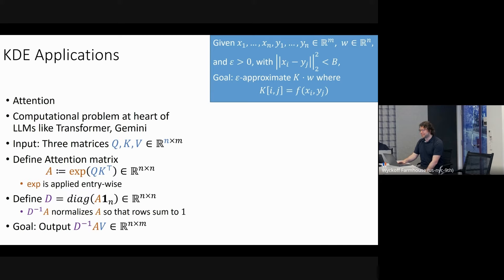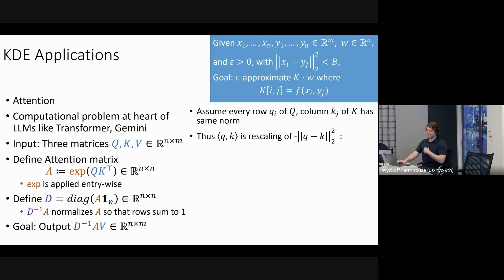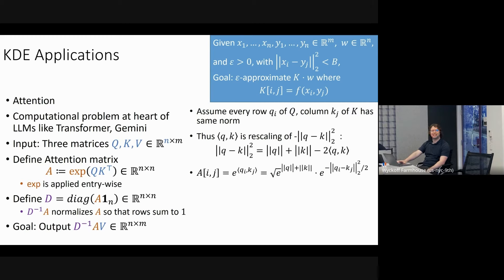This is again a problem where the straightforward algorithm takes about quadratic time — you construct this n-by-n matrix A in n²·m time. But this is actually a very similar problem to KDE, and you can solve it with kernel density estimation. Assuming the rows of Q and columns of K all have the same norm, the inner product between a row of Q and a column of K is just a rescaling of the distance between those vectors. So the attention matrix entries are rescalings of Gaussian kernel matrix entries.